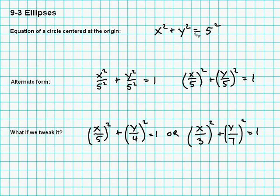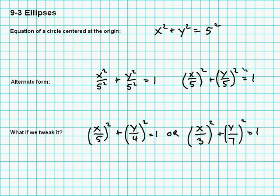Here's the equation of a circle: x squared plus y squared equals r squared, so the radius is five and it's a circle centered at the origin. Now we can put this in a different form if we divide through by the constant. If I divide by five squared, I get one, and I divide each term by five squared and I get something that looks like x divided by five, squared, plus y divided by five, squared, equals one. Either form is adequate.